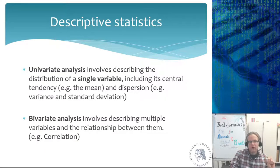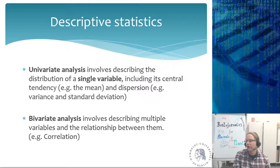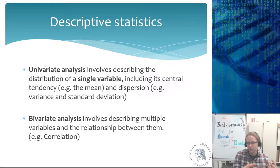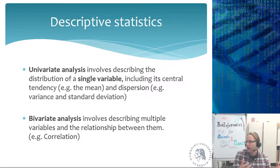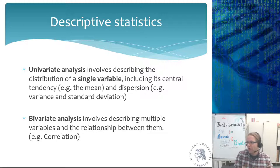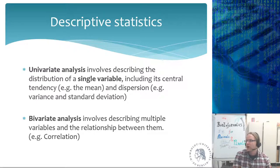Descriptive statistics comes in two flavors. Univariate analysis looks at a single variable or measurement — for example, we measured body weight and want to show how it was distributed: what was the mean, the variation, the standard deviation? Then there's bivariate analysis, like correlation, where you take two phenotypes and look to see if there is a relationship between them and, if so, what kind of relationship.